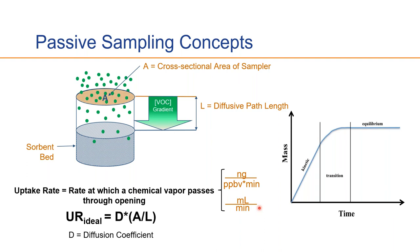Theoretical uptake rates can be calculated using Fick's law and the assumption of zero concentration boundary at the sorbent surface. The ideal uptake rate uses the effective diffusion coefficient — which is chemical specific — as well as the geometry of the sampler. A is the cross-sectional area of the opening and L is the diffusive path length. The larger the cross-sectional area, the higher the uptake rate; the shorter the path length, the higher the uptake rate. So sampler geometry plays a significant role in the uptake rate.